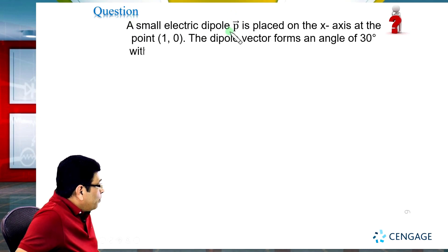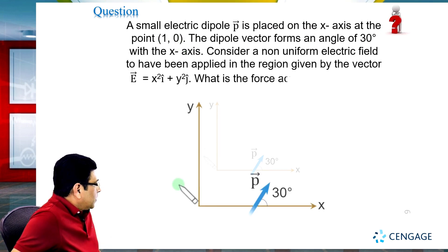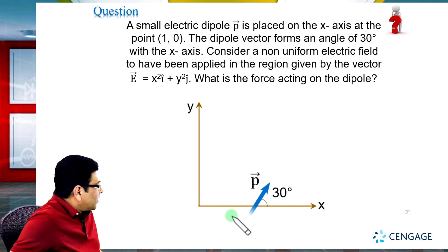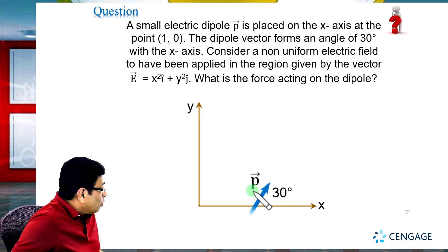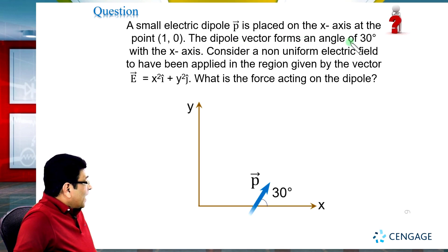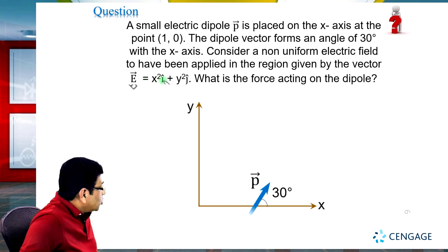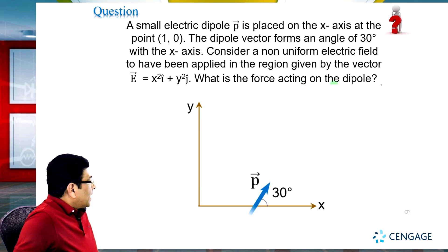In this illustration, a small electric dipole p-vector is placed on the x-axis at point (1, 0). As you can observe in the diagram, this dipole having dipole moment p-vector is placed at coordinate (1, 0). The dipole vector forms an angle of 30 degrees with the x-axis. Consider a non-uniform electric field given by E-vector equal to x-squared i-cap plus y-squared j-cap. What is the force acting on the dipole?